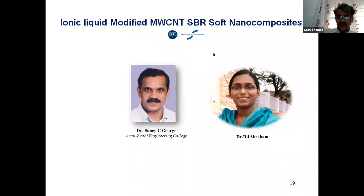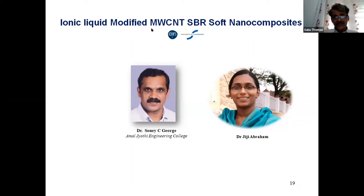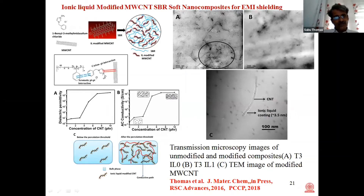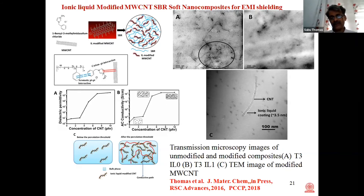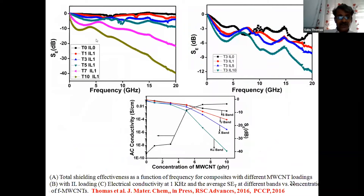Another piece of work: my PhD student introduced multi-walled carbon nanotubes into SBR rubber to make soft materials for EMI shielding applications. Dispersing MWCNTs in SBR rubber is very difficult, so we made use of an ionic liquid as a coupling agent, which gave excellent dispersion. We made a series of EMI shielding compounds and achieved up to approximately 40 dB shielding effectiveness — a very flexible rubber composite made by putting carbon nanotubes into SBR rubber.